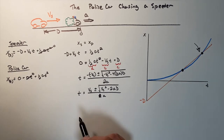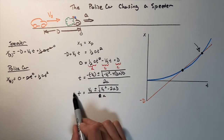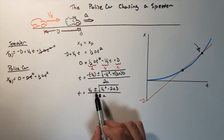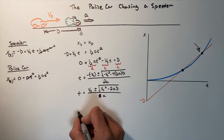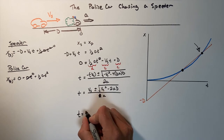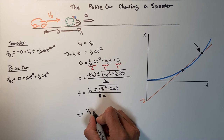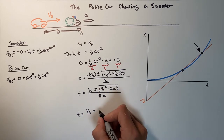We want to take this function and use only the larger of the two results. That means the correct answer to this problem is the positive of the two quadratic solutions.